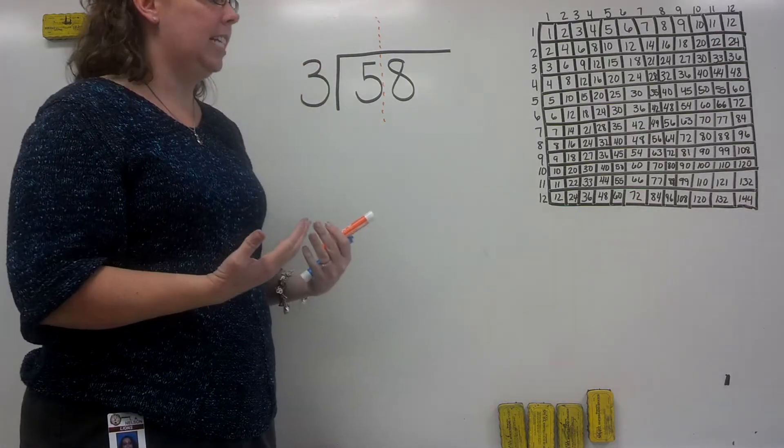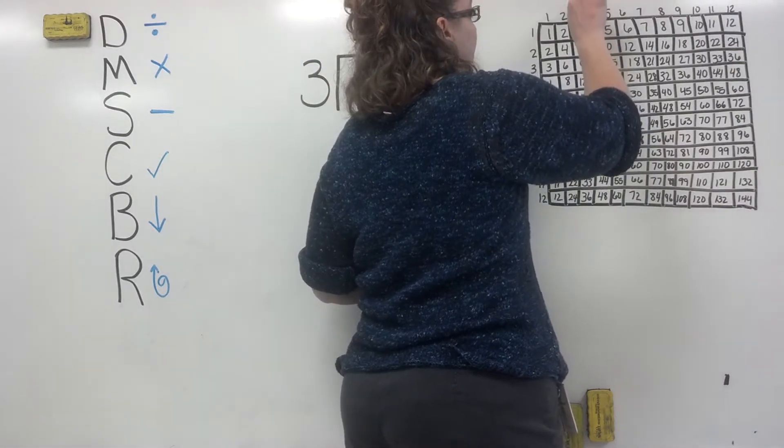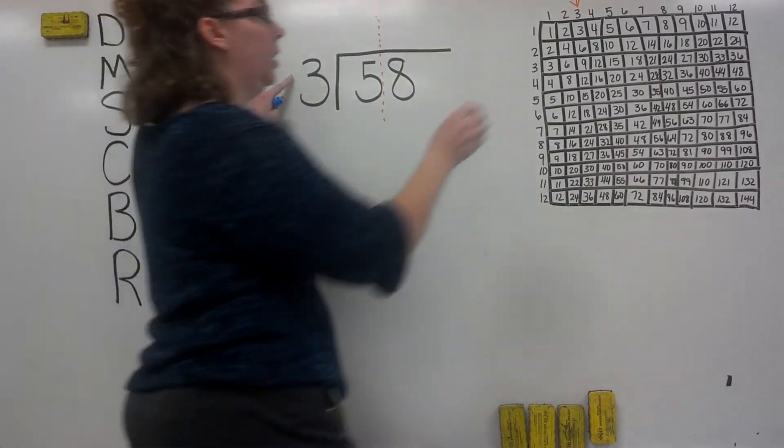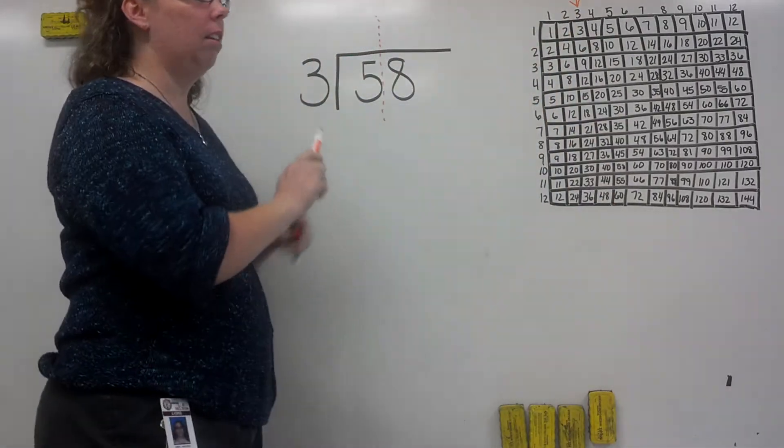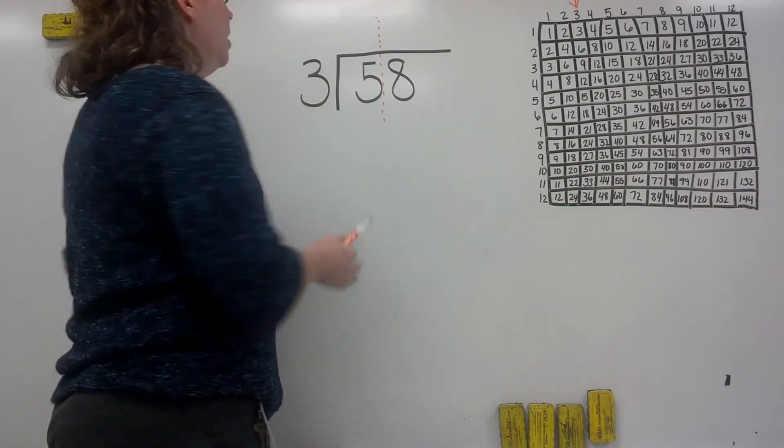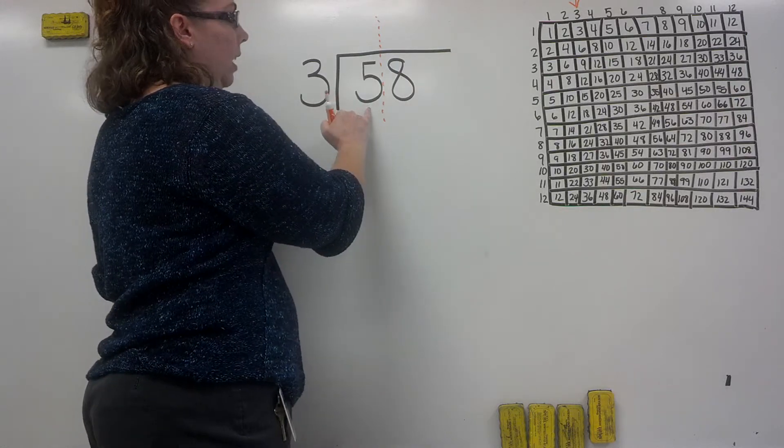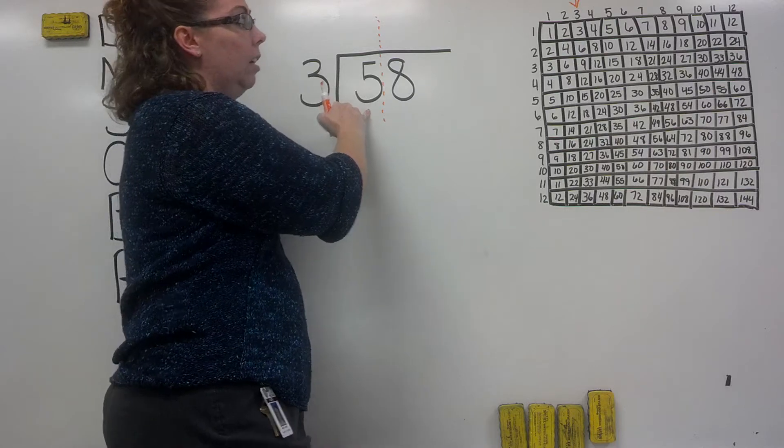The answer is yes. Using your multiplication chart, remember if we're working with 3, you're going to be looking in your threes column the entire time. What we want to do is find the number that is less than or equal to 5 without going over.